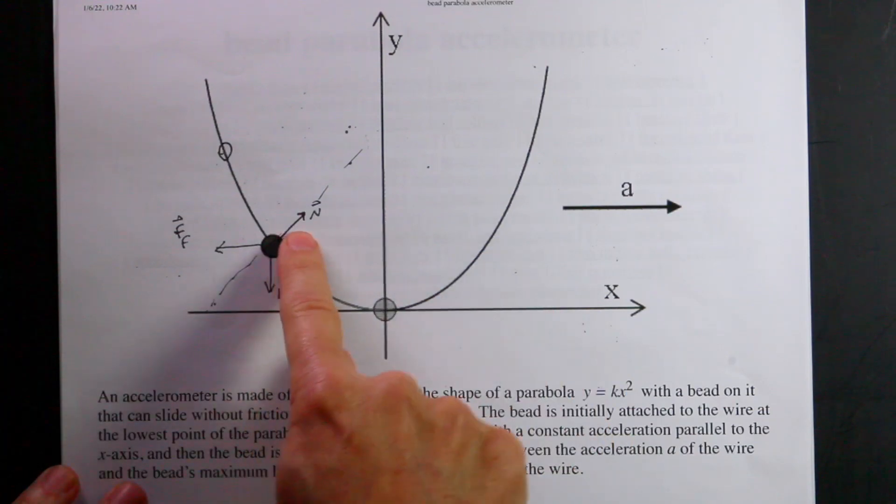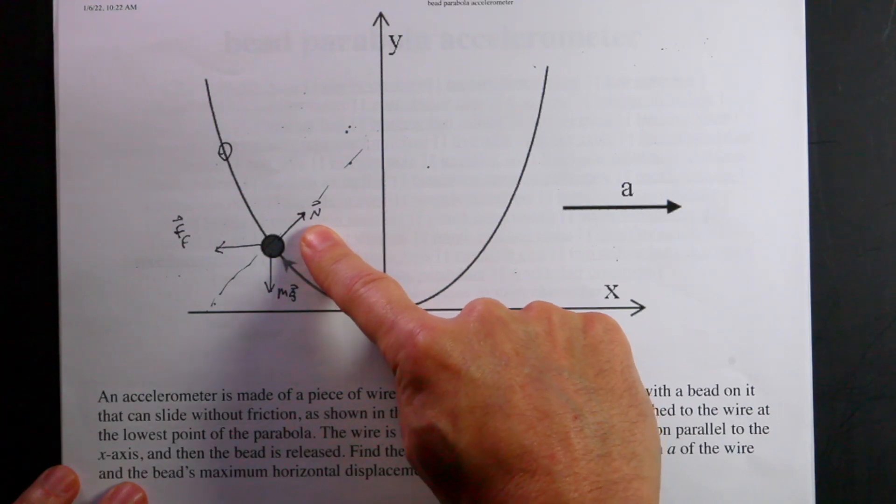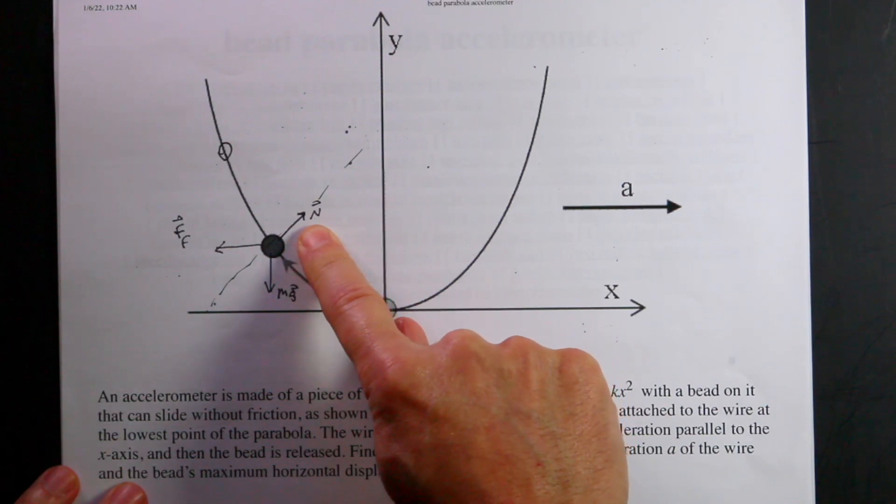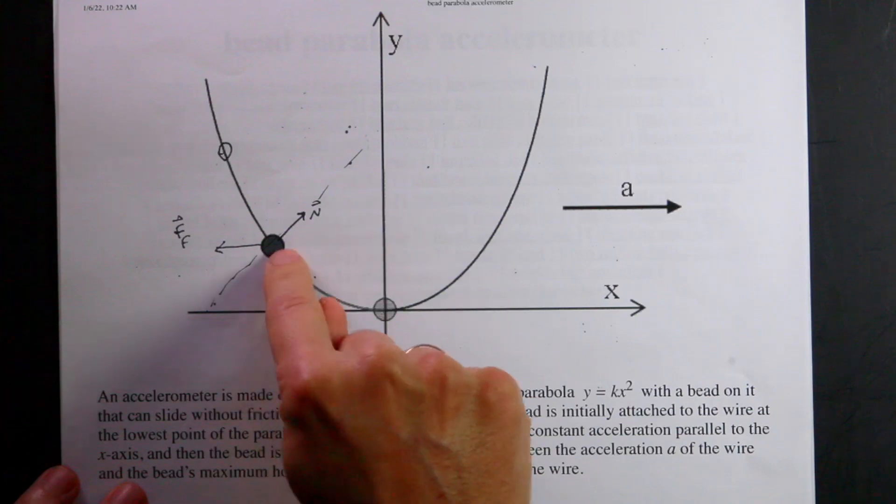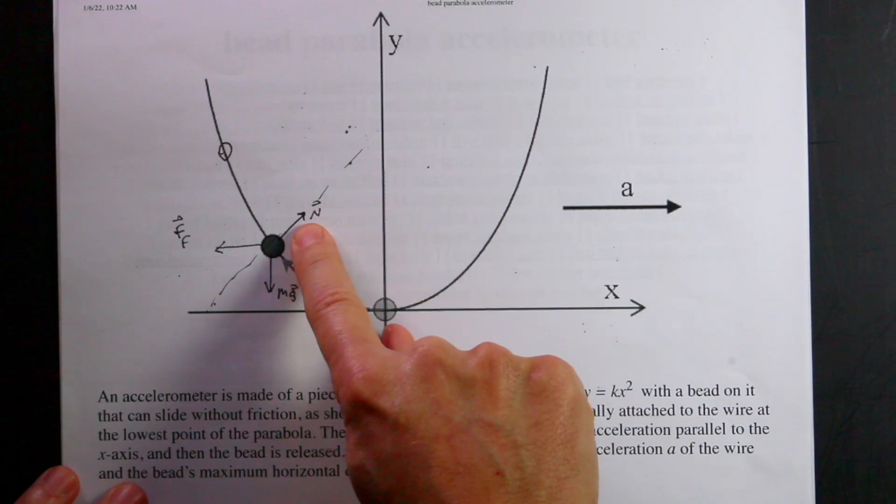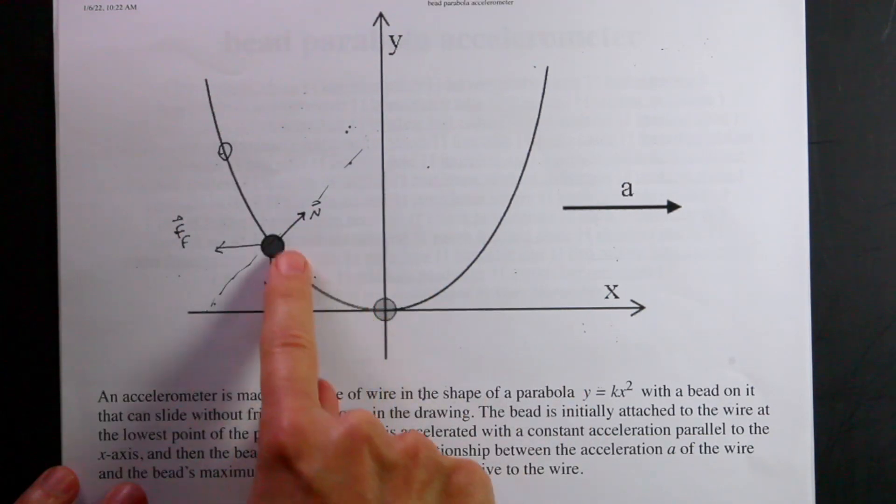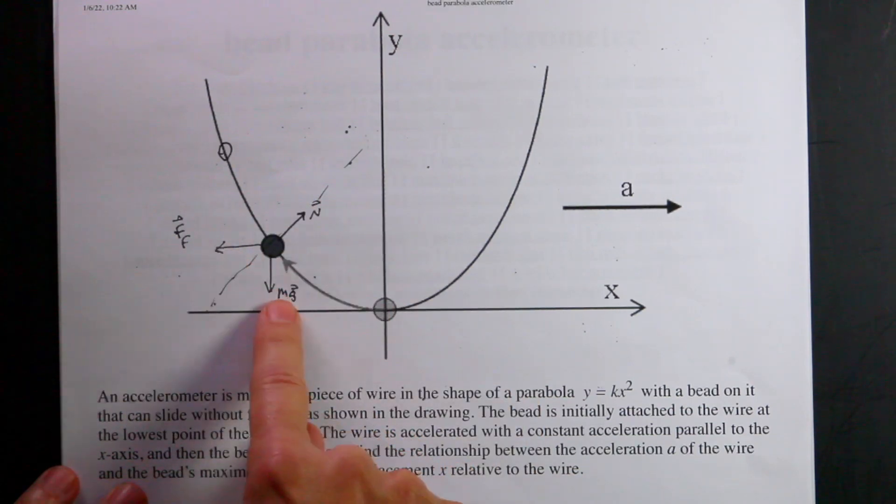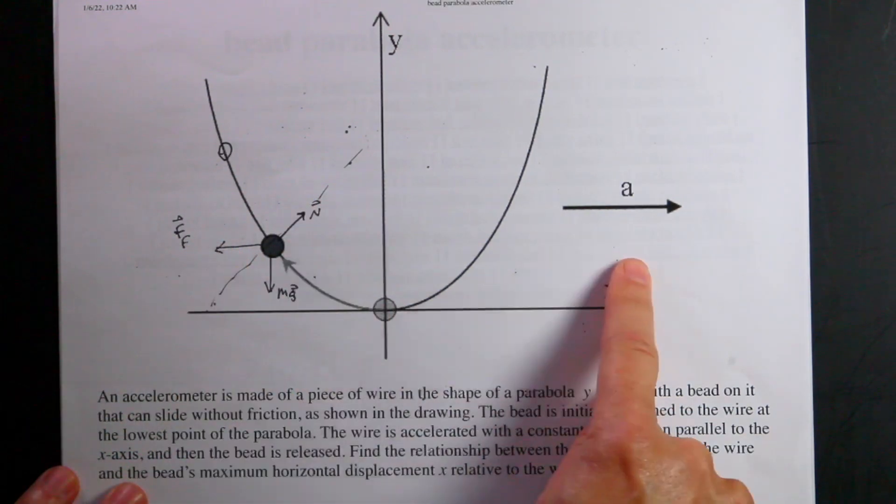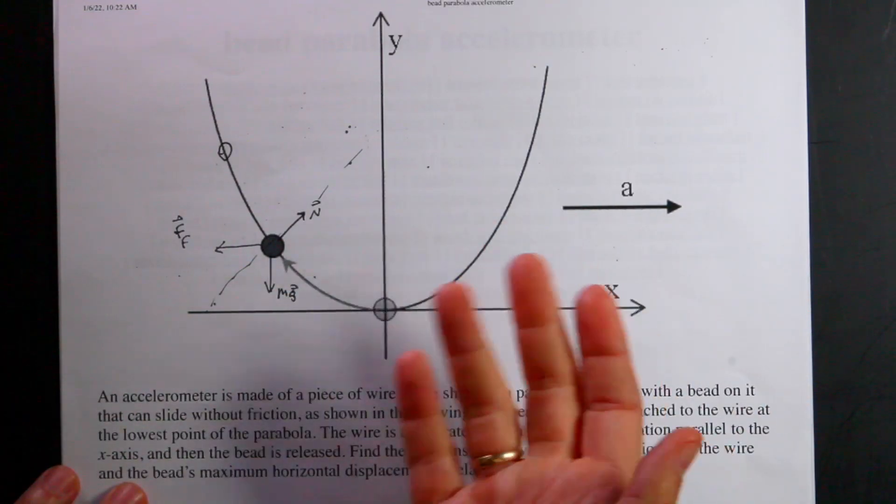My first attempt was to try to calculate this force of constraint. Forces of constraint are really difficult in Newtonian physics because they don't have an exact expression. You're going to have to figure it out some other way. So I tried to do that by assuming that the bead wouldn't accelerate in the direction. And it didn't work in Python.